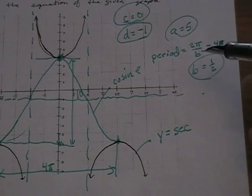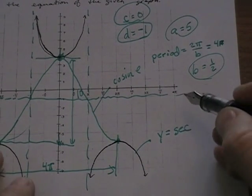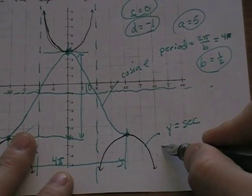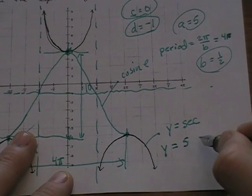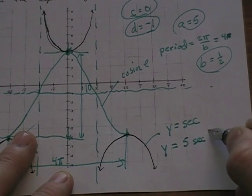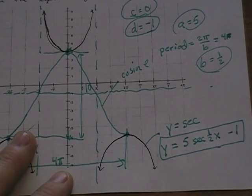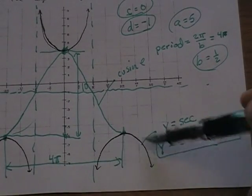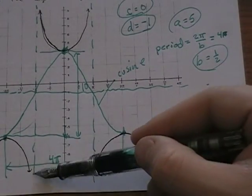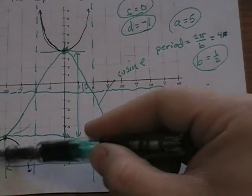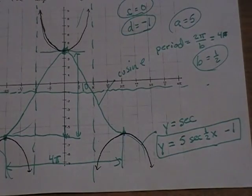So if I know a, b, c, and d, I can now write my secant equation, and that secant equation is going to be y equals 5 secant 1 half x minus 1. And that equation will give me this original graph that's in black. It'll give me these parabola looking things that go here, here, and here. So it's a fun little thing to do. It's very much like writing the equation for a cosine or a sine graph, and if you have any questions, please let me know.